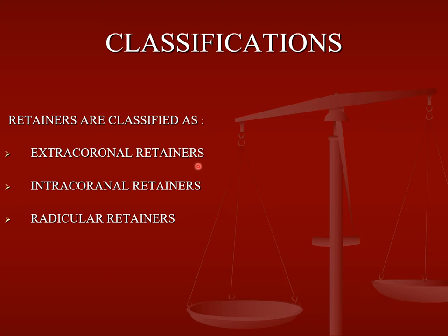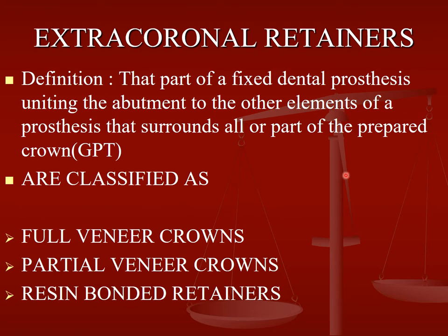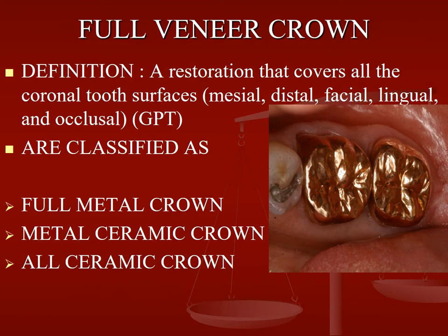Coming to the classification, retainers can be classified into extra-coronal retainer, intracoronal retainer, and radicular retainer. The extra-coronal retainer is a part of the fixed dental prosthesis that unites the abutment to other elements of the prosthesis and surrounds all or part of the prepared crown. It is classified as full veneer crown, partial veneer crown, and resin-bonded retainers.